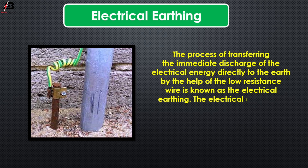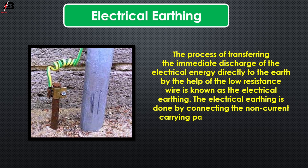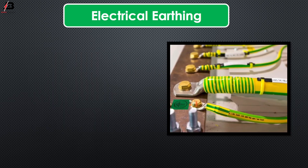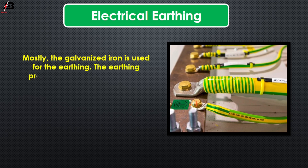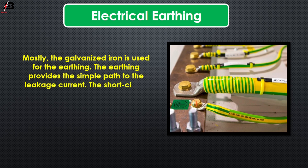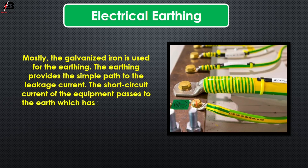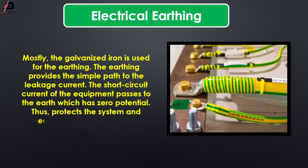Electrical earthing is done by connecting the non-current carrying part of the equipment or neutral of the supply system to the ground. Mostly, galvanized iron is used for earthing. The earthing provides a simple path for the leakage current. The short circuit current of the equipment passes to the earth, which has zero potential, thus protecting the system and equipment from damage.